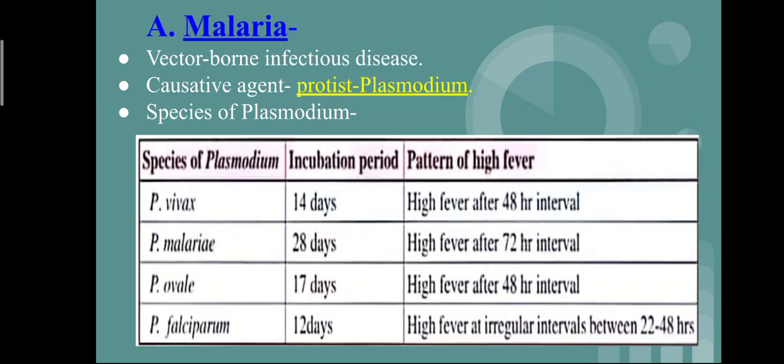We will study the incubation period and patterns of fever due to the different species. Plasmodium vivax has an incubation period of 14 days and shows high fever after a 48-hour interval. Plasmodium malariae has an incubation period of 28 days and shows high fever after a 72-hour interval. Plasmodium ovale has an incubation period of 17 days and shows high fever after a 48-hour interval.